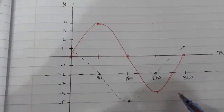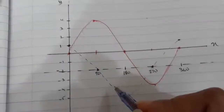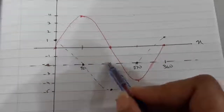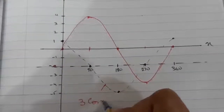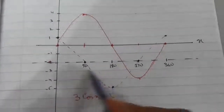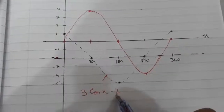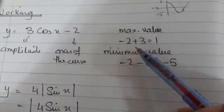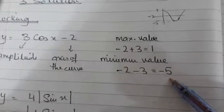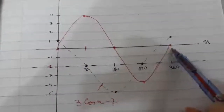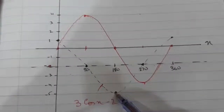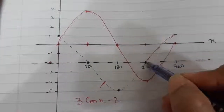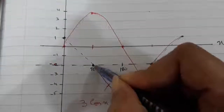Now we sketch the cos graph which is 3cos x minus 2. Minus 2 is the axis of the curve. We just saw that the maximum value is 1 and minimum value is -5. In the cos graph, the maximum value happens at 0 degrees — so it is 1 — and at 360 degrees it is also 1, and at 180 degrees we always have the smallest value, which is -5.